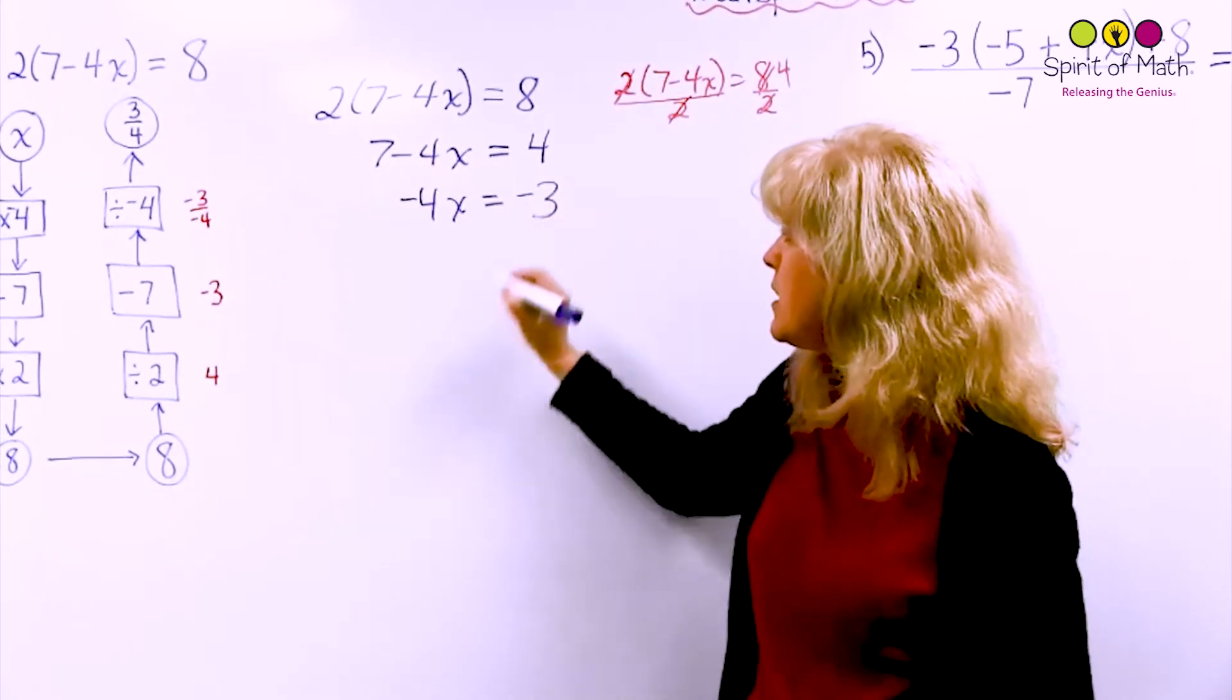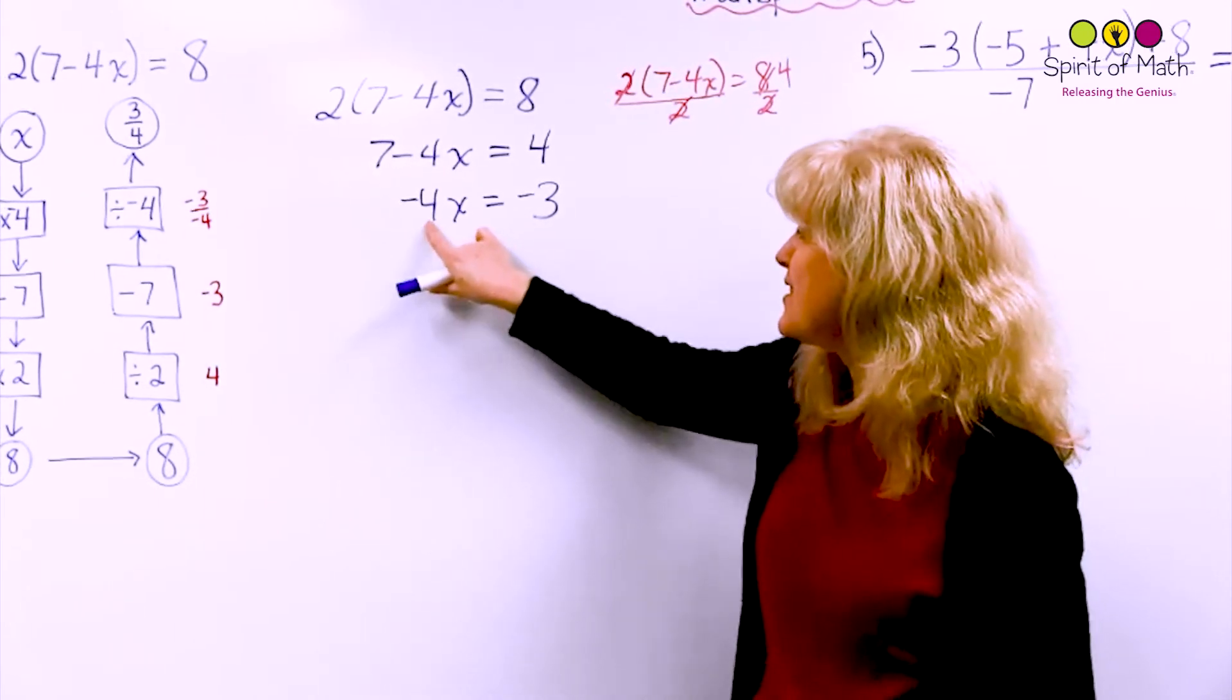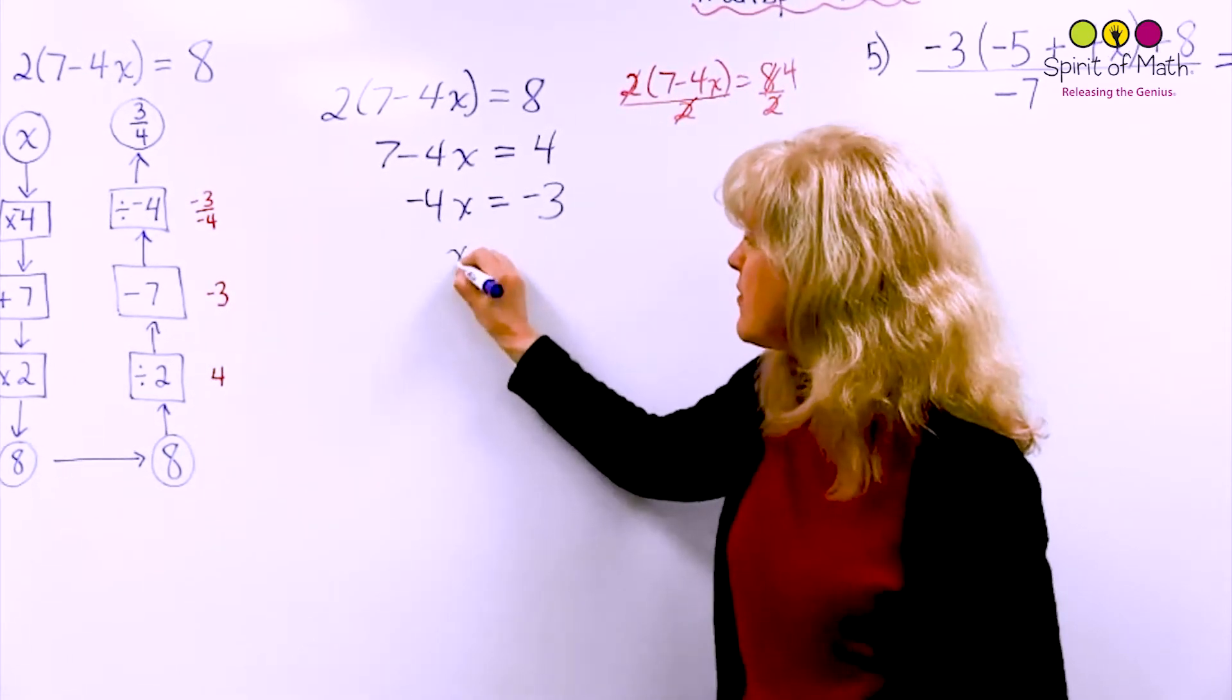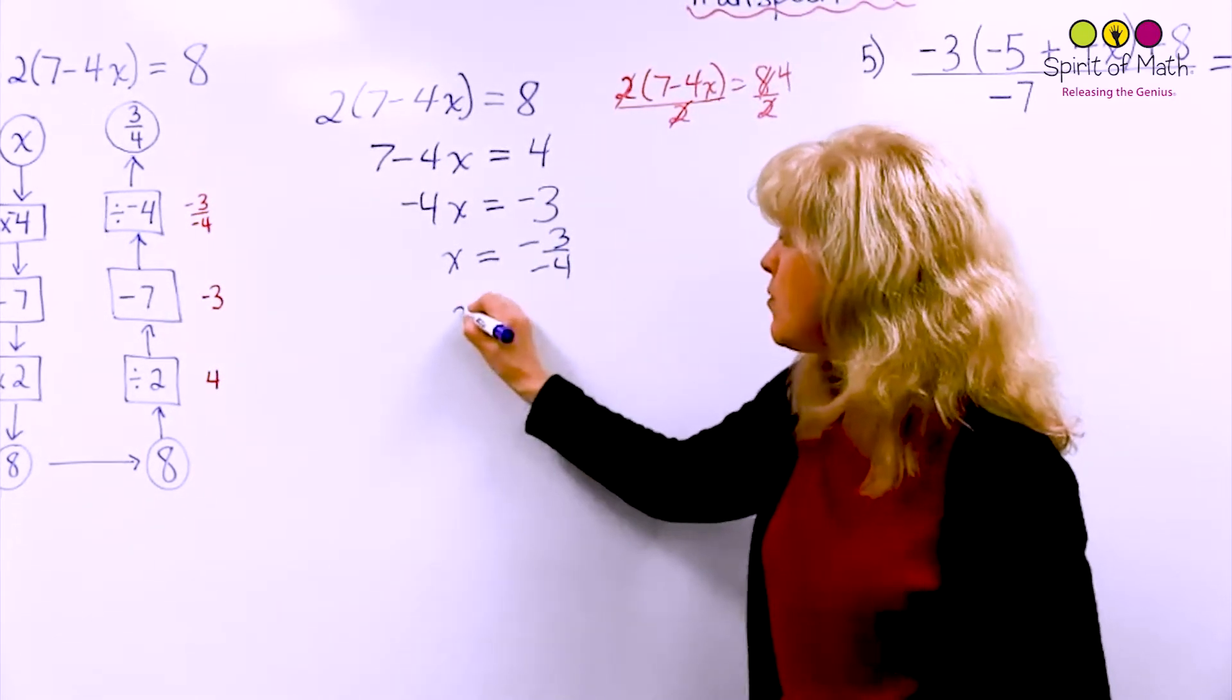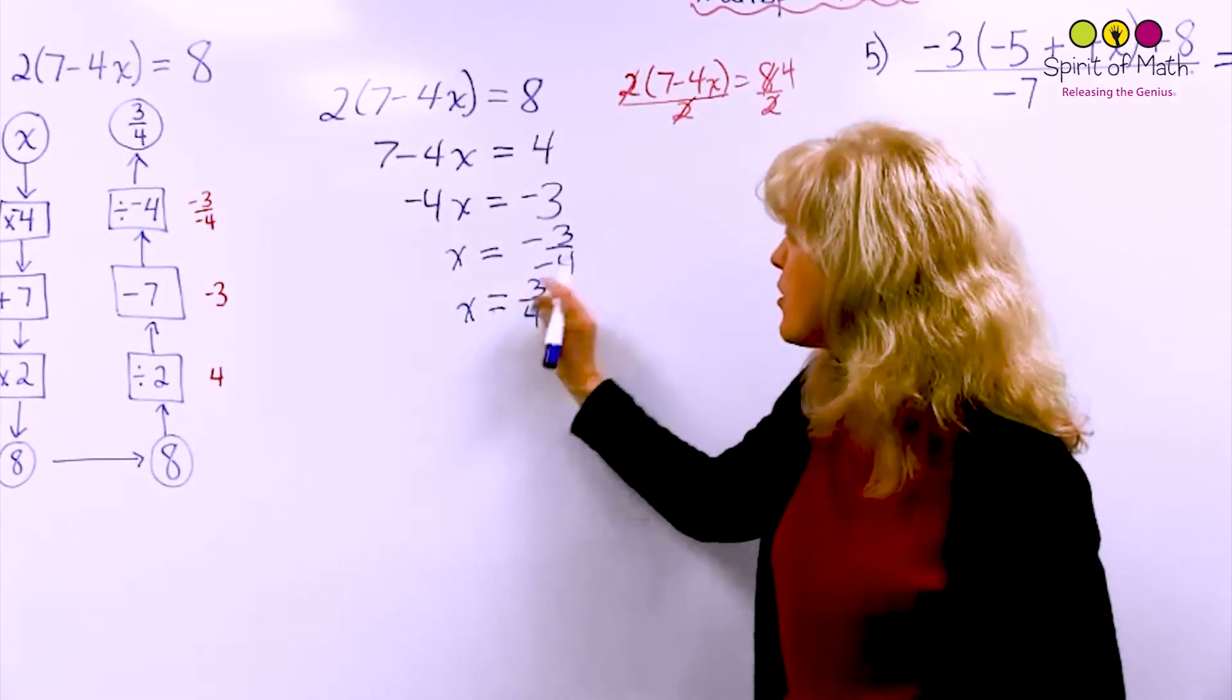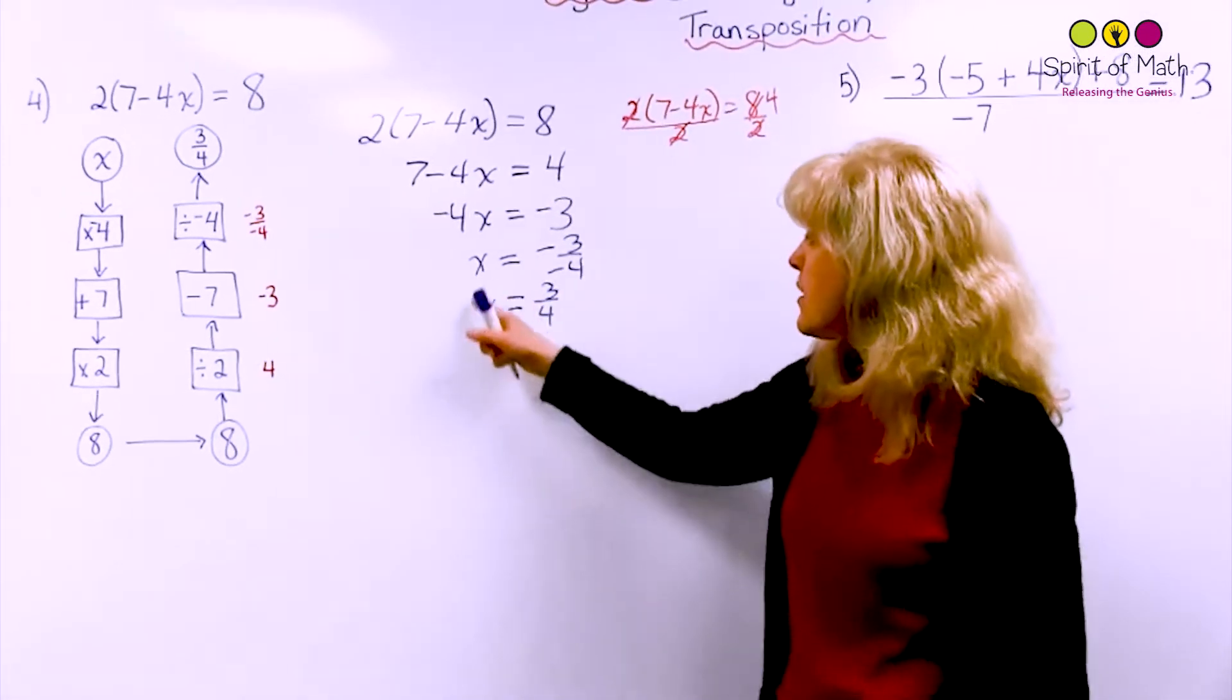And now this says negative 4 times x, the opposite operation is divide by negative 4. So you divide by negative 4, and you get negative 3 over negative 4, which really is just 3 over 4. And you could have just written that as 3 over 4 in this step. I just wanted to show you that's divide by negative 4. So there's your answer.